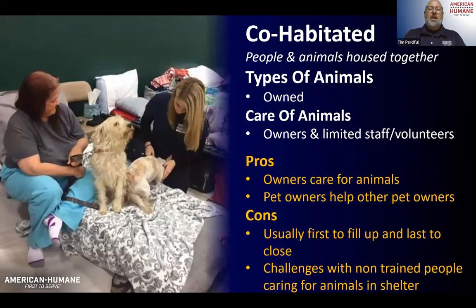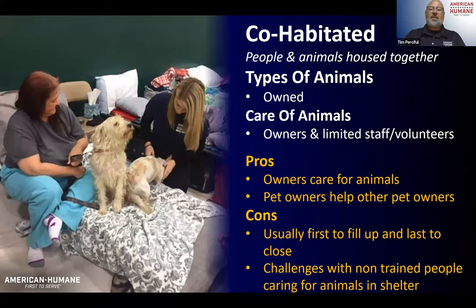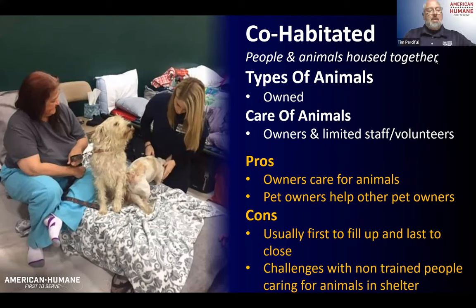Just like a co-located shelter, all the animals here are going to be owned — no strays or rescued animals unless those animals belong to the owners present. You might have limited staff and volunteers, and there are times because this is also a human shelter that you may not have any animal people there at all. It might just be that one staff member on the human side is acting as a liaison to the animal people.